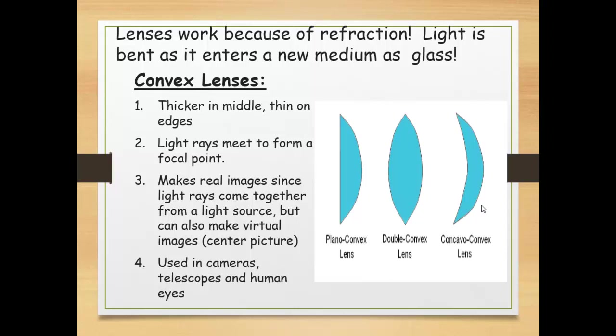This is a convex lens. Thicker in middle, thin on ends. At two ends, the convex lens is thin. In the middle is thick. Light rays meet to form a focal point. Light rays make real images since light rays come together from a light source, but can also make virtual images. Used in cameras, telescopes and human eyes. This is a plano-convex lens.